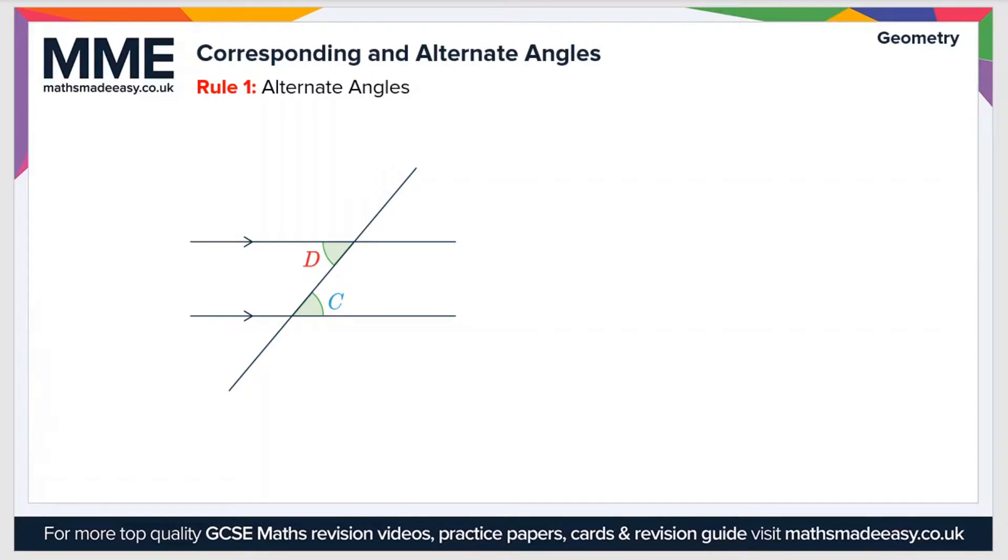The first type is alternate angles. These are sometimes known as Z angles because they form a Z shape. In this example we have D and C, and the rule is that alternate angles are the same. So in this case D equals C.